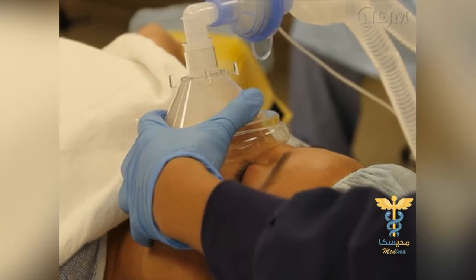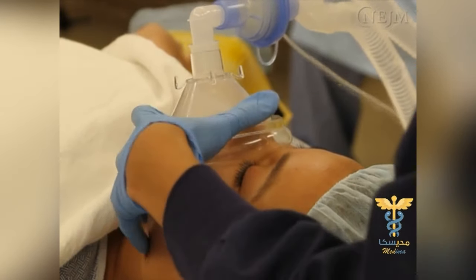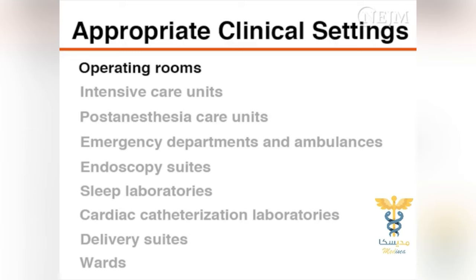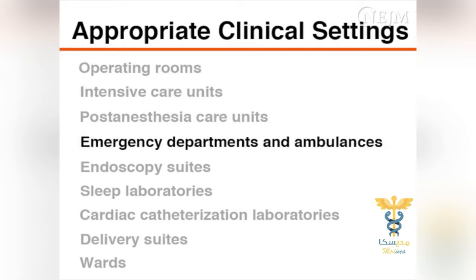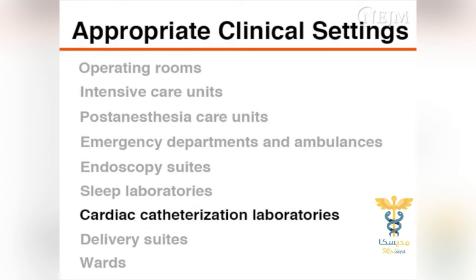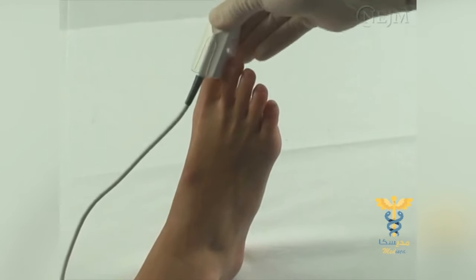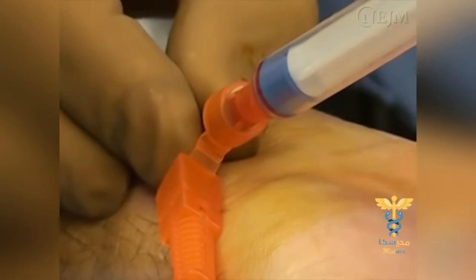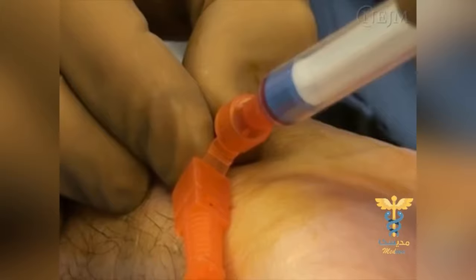Pulse oximetry is indicated in all clinical settings where hypoxemia may occur, such as operating rooms, intensive care units, post-anesthesia care units, emergency departments and ambulances, endoscopy suites, sleep laboratories, cardiac catheterization laboratories, delivery suites, and wards. The use of pulse oximetry in these settings may reduce the need for arterial blood gas analyses and may guide clinical decision-making.